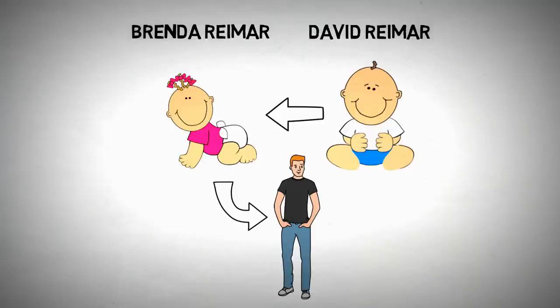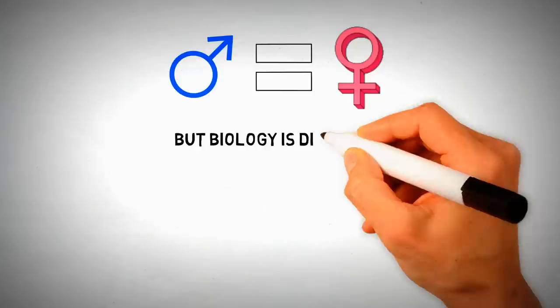This shows that despite the social pressures on David of his parents and doctors to identify and behave as a girl, he still felt like a boy. Those who argue nature over nurture also say that men and women are inherently equal, but differ in biology.